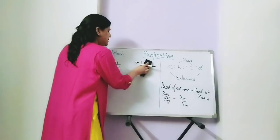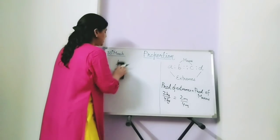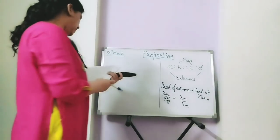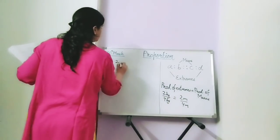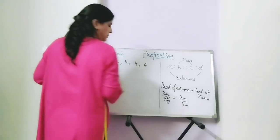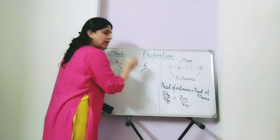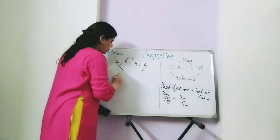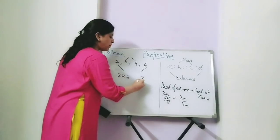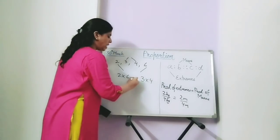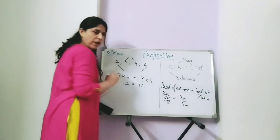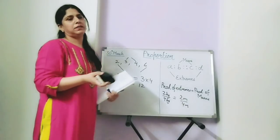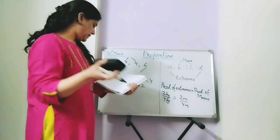Let us take an example. Check whether these numbers are in proportion: 2, 3, 4 and 6. Here 2 and 6 are the extremes, and 3 and 4 are the means. So multiply: 2 multiplied by 6 and 3 multiplied by 4. Are they equal? 2 times 6 is 12, and 3 times 4 is 12. When the product of extremes is equal to the product of means, the numbers are said to be in proportion.